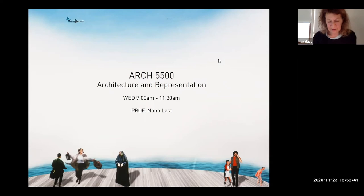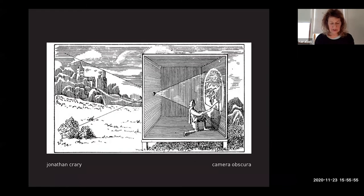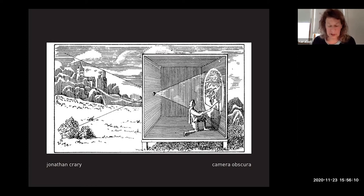The first section of the course is Modernism, and we will begin with questions about the relations between vision, observation, and visual technologies. To discuss that, we will talk about the problem of the observer. We see here an image from Jonathan Crary's book, which we will read a couple of chapters from, covering his discussion of the camera obscura and its subject, as well as the idea of visionary abstraction.